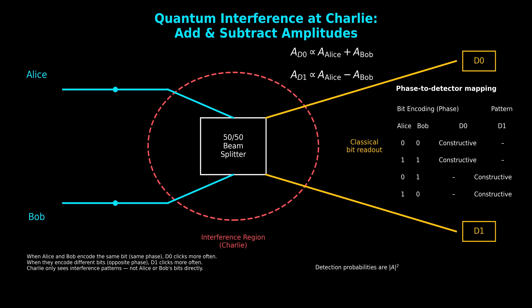This entire process is driven by quantum interference, and this image shows the visual and mathematical structure behind it. Alice and Bob's photons enter Charlie. Alice is on the top and Bob is on the bottom — each one sends a single photon toward Charlie, encoded with either a zero phase or a pi phase, depending on whether they're sending a logical zero or one. The cyan lines represent their quantum channels, and the cyan circles mark their qubit states arriving at Charlie. In the center is the 50-50 beam splitter — the device that mixes Alice's photon and Bob's photon. It doesn't measure them; instead, it forces their probability amplitudes to interfere.